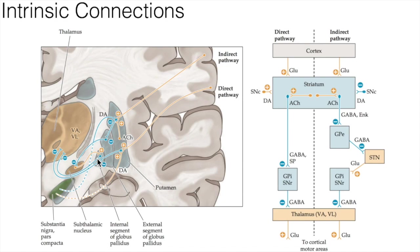The cells in the internal segment of the globus pallidus and the substantia nigra pars reticulata project to thalamic neurons. These fibers have a high rate of spontaneous activity and thus tonically inhibit target thalamic neurons. Inhibition of these pallidal and nigral projections by striatal cells decreases the inhibitory input to thalamocortical neurons. So the net effect of the direct pathway is to increase the activity of the thalamus and the consequent excitation of the cerebral cortex.